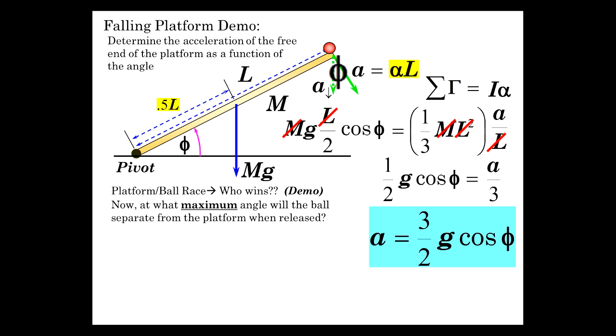So at what maximum angle does that happen? So we're really looking for this part of the acceleration, the downward acceleration. So looking at the geometry, this is phi, and we have a right triangle. So we're going to solve for A vertical. And that is A cosine of phi, the A that we just discovered.